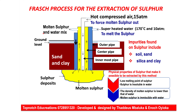In the collection tank, the molten sulfur is mixed with water and then it solidifies at a temperature of around 115 degrees Celsius. To summarize the extraction of sulfur: the outermost pipe carries superheated water to melt the sulfur; the hot compressed air flows through the innermost pipe to force the molten sulfur out; and the molten sulfur is collected through the middle pipe.